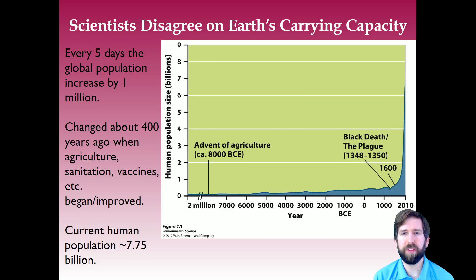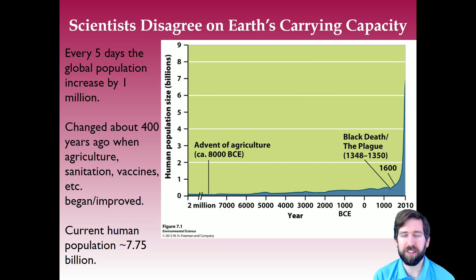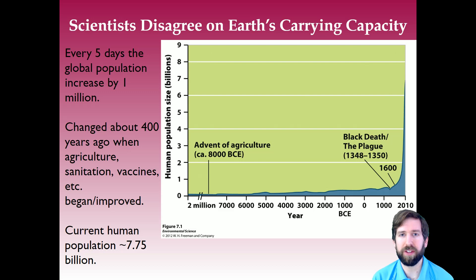An important thing to remember when talking about human populations is that we've never had this many people on Earth. Having these large populations is a brand new concept, and one that scientists are often disagreeing about — specifically, how many people can actually live on Earth. Every five days the global population increases by one million. The current population is about 7.75 billion and is projected to continue to increase rapidly, though they're not exactly sure when it will peak.